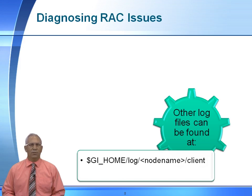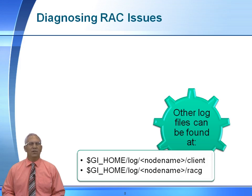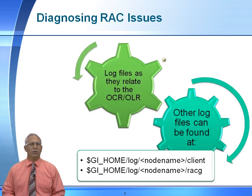If we want to look at other RAC issues, we could go to the grid infrastructure home slash log node name and then look at those specific directories. However, in an Oracle 12c environment, some of these files have been deprecated. Under 12c, pretty much everything is going to be located under the ADR. There may be some log files that have to be located under the grid infrastructure home, but the first stop would be the ADR.